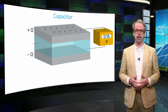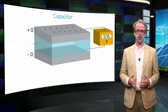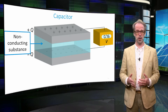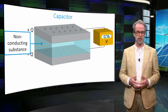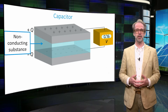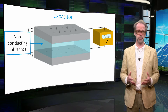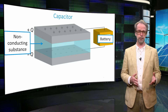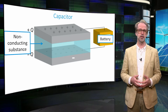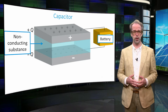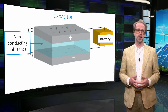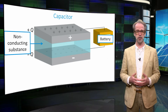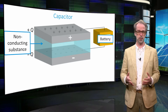In a capacitor there are two metal plates that are separated by a non-conducting substance. The non-conducting substance can be as simple as air. You store energy in a capacitor by applying a certain potential, for instance by attaching a battery. As a result, negative charge will collect on one plate and positive charge on the other plate of the capacitor. The amount of electrical charge that is built up determines the amount of energy you can store in such a capacitor.